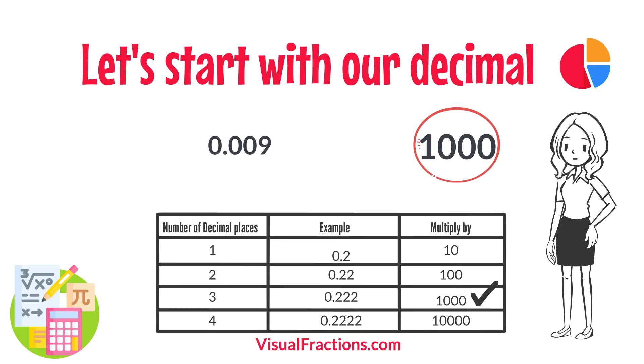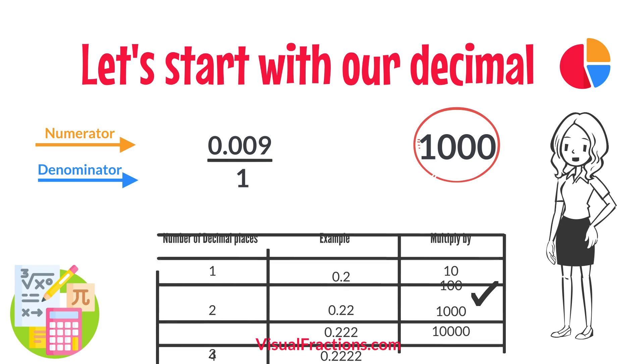To convert this decimal into a fraction, you initially put 0.009 over 1, essentially treating the decimal as the numerator in a fraction where the denominator is 1.